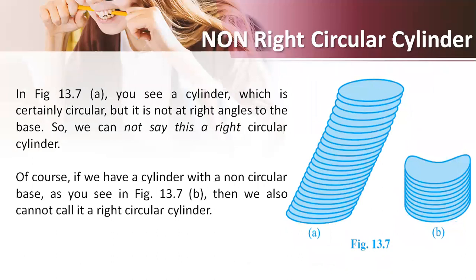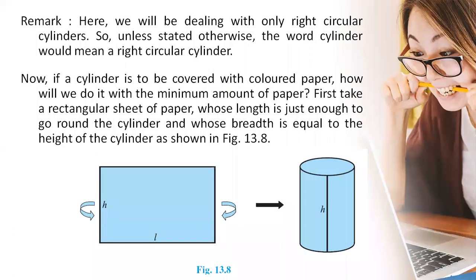So here we see a cylinder which is certainly circular but it is not at a right angle to the base, so we cannot call it a right circular cylinder. Of course if we have a cylinder with a non-circular base as seen in figure 13.7b, then also we cannot call it a right circular cylinder. So here we will be dealing with only right circular cylinders; unless stated otherwise, the word cylinder would mean a right circular cylinder.